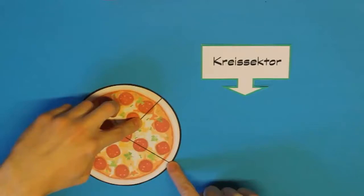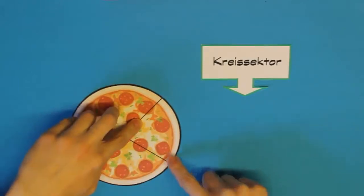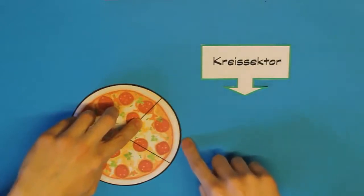Also, zusammengefasst, besteht ein Kreissektor eben aus zwei Radien und aus dem runden Verbindungsstück, das ist der Kreisbogen.